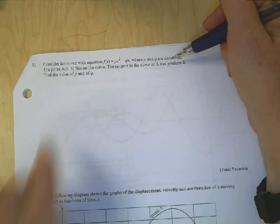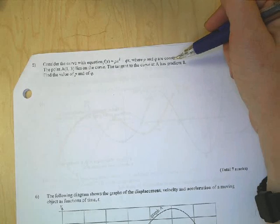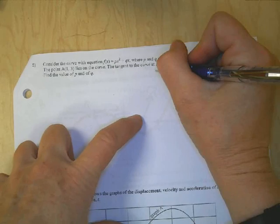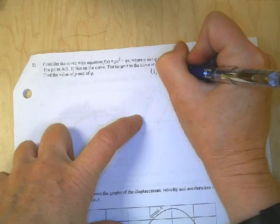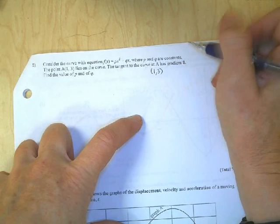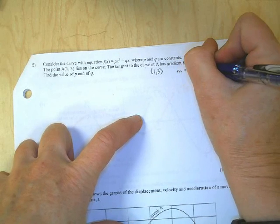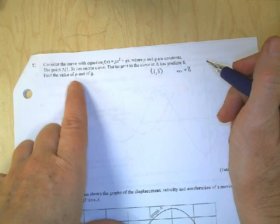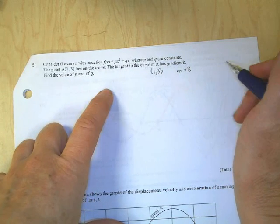We have a point that's on the curve, and the tangent to the curve at point A. So point A, remember, is at (1,3). The tangent at point A has a gradient of 8. Okay, slope is equal to 8 at this point (1,3). Find the values of P and Q. Interesting.